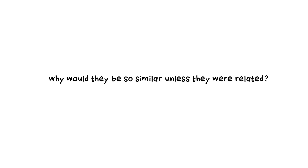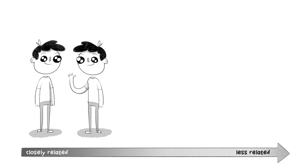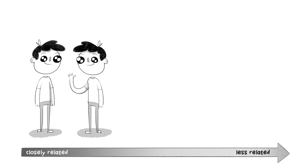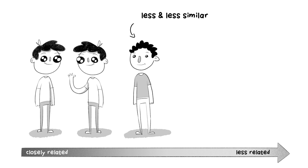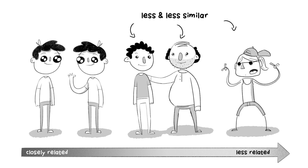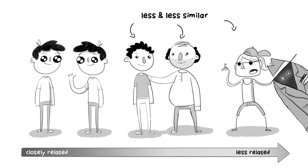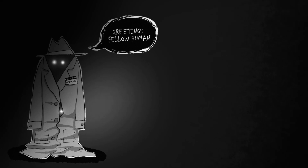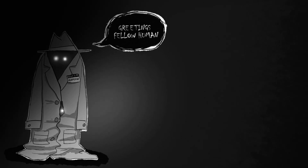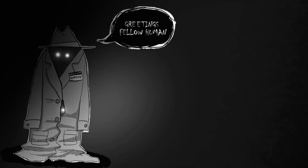Why would they be so similar unless they were related? And this does make sense. After all, take siblings — they look pretty similar. They're closely related. Then take cousins, or third uncles, or former roommates, or that weird guy down the street who's always going on about how he's a real human, but you're pretty sure he's just a stack of goblins in a trench coat.